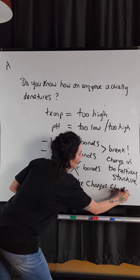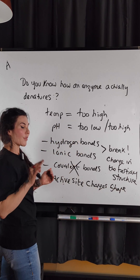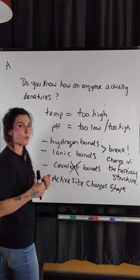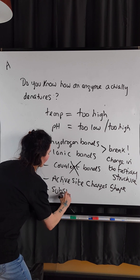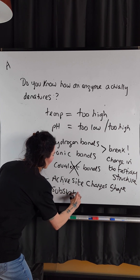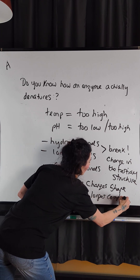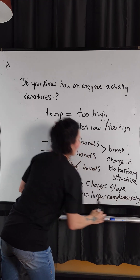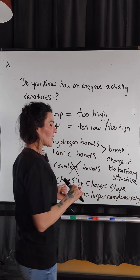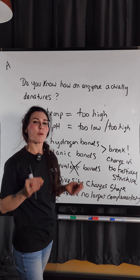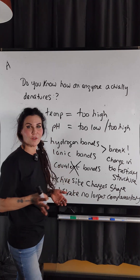If the active site changes shape, it's no longer going to complement the substrate that should normally bind with it. And if the substrate is no longer able to bind with the enzyme's active site, then we have no enzyme-substrate complexes forming and the reaction will not happen.